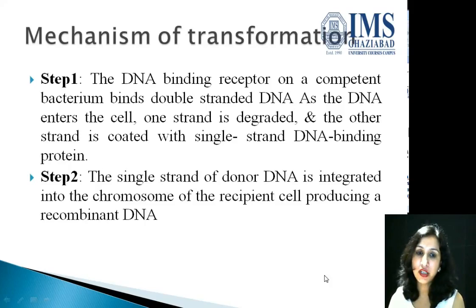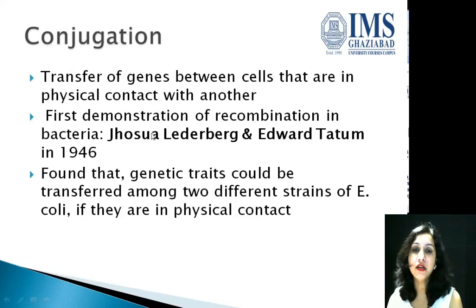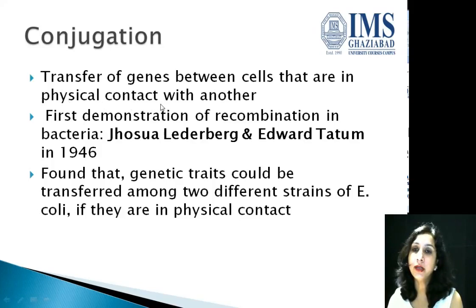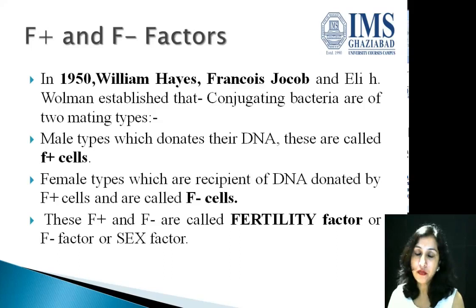Another process is conjugation, which was described by Joshua Lederberg and Edward Tatum in 1946. It is the transfer of genes between cells that are in physical contact with one another — physical contact is required for the exchange of genetic material. It was found that traits could be transferred between two different strains of E. coli when they are in physical contact with each other.